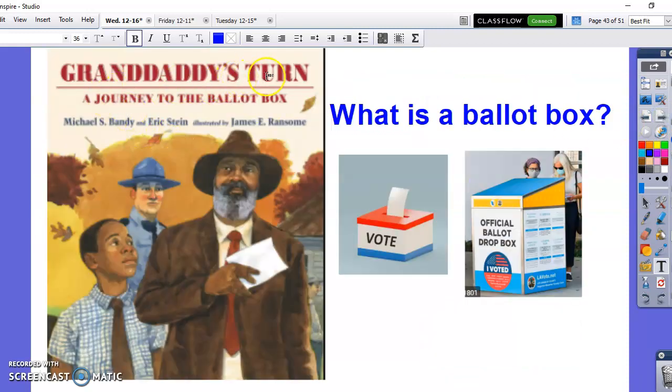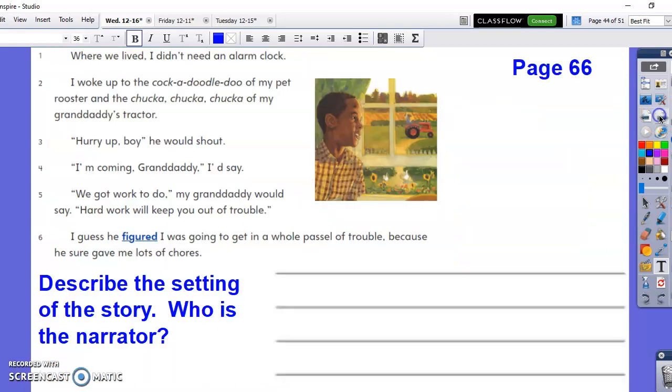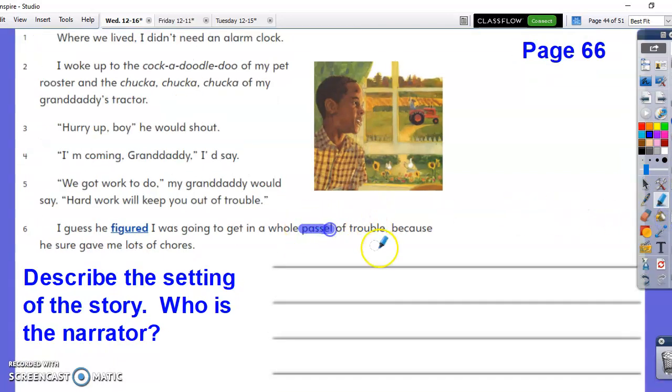And the title is Granddaddy's Turn, A Journey to the Ballot Box. Do you know what a ballot box is? A ballot box is a place, or a box, where you would put your vote to vote in an election. Where we lived, I didn't need an alarm clock. I woke up to the cock-a-doodle-doo of my pet rooster and the chuk-a-chuk-a-chuk-a of my granddaddy's tractor. Hurry up, boy! He would shout. I'm coming, granddaddy! I'd say. We got work to do, my granddaddy would say. Hard work will keep you out of trouble. I guess he figured I was going to get in a whole passel of trouble, because he sure gave me lots of chores. I need to remind the students to ask them what the word passel means in context.